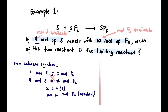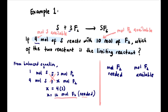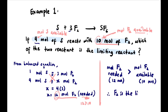Now we compare moles of F₂ needed versus moles of F₂ available. Moles of F₂ needed = 12 moles; moles of F₂ available = 10 moles. Since 12 is greater than 10, moles needed is greater than moles available — we need more than we have. Therefore, F₂ is the limiting reactant.